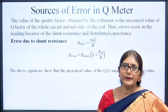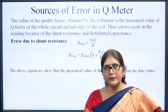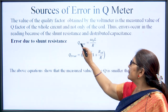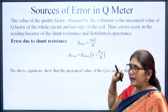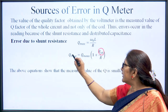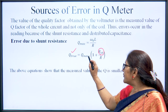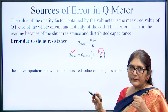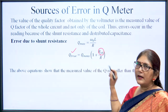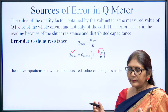There are sources of error in Q meter because measured Q includes circuit resistance and circuit Q. The shunt resistance RSH causes error: the maximum Q = ω₀L/R, but the true value equals the measured Q multiplied by (1 + RSH/R). So the measured Q is smaller than the true Q due to RSH.